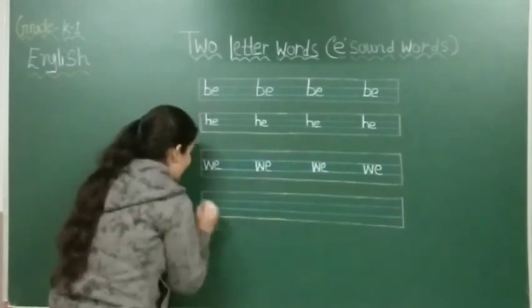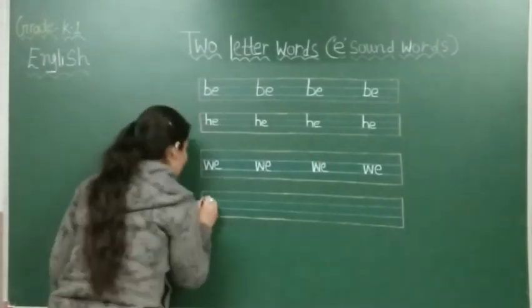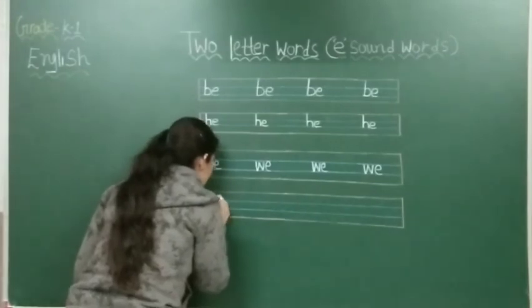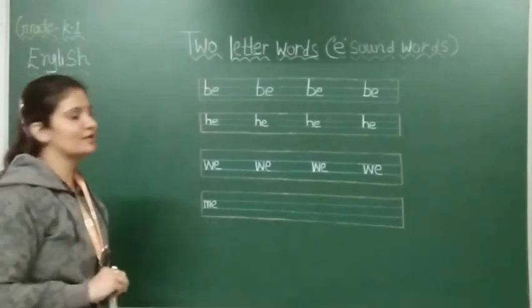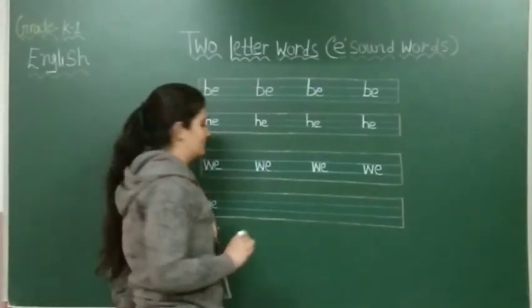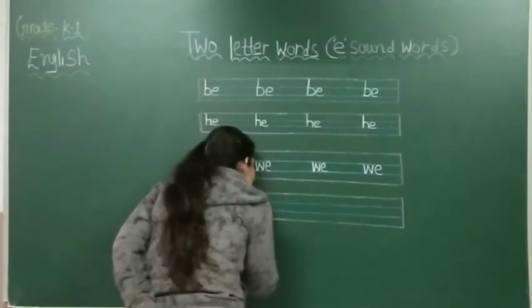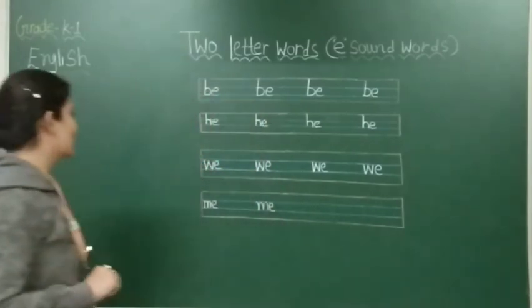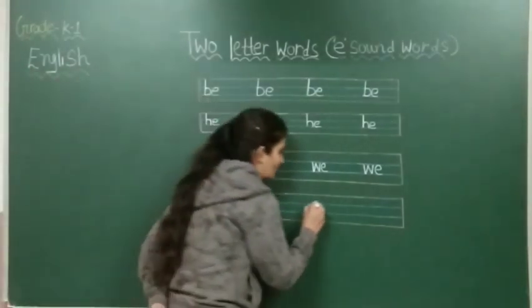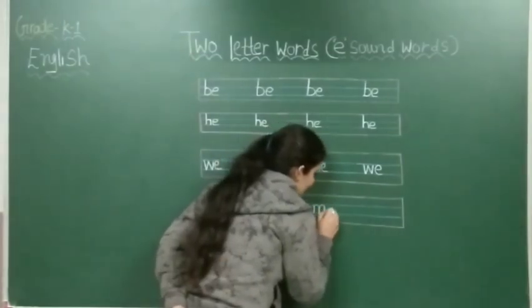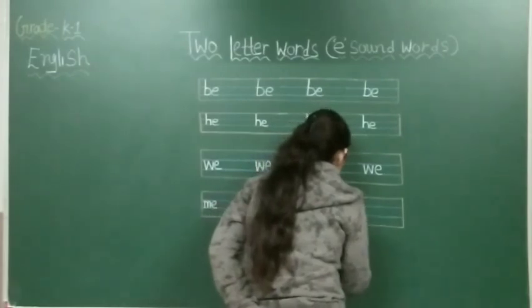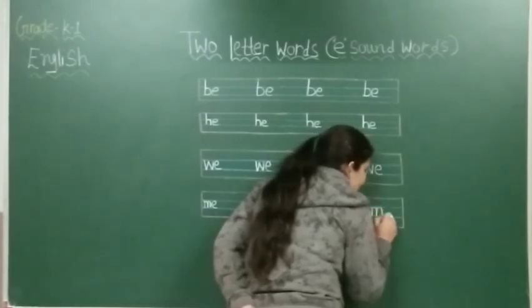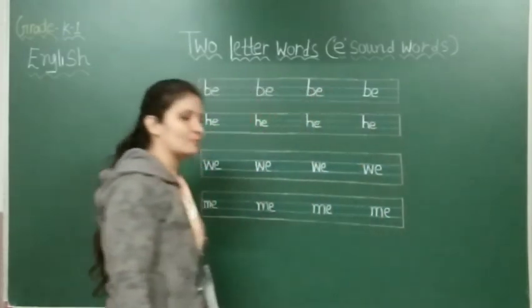Which E-sound word will come next? That is M, E — ME. Write M in the two blue lines, then write E. In phonics, M says 'm' and E says 'e' — ME.